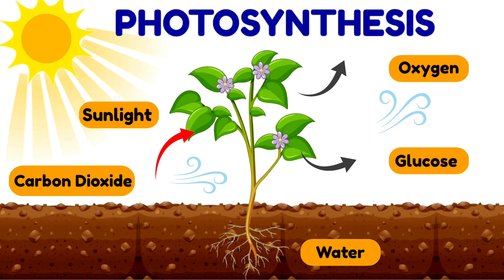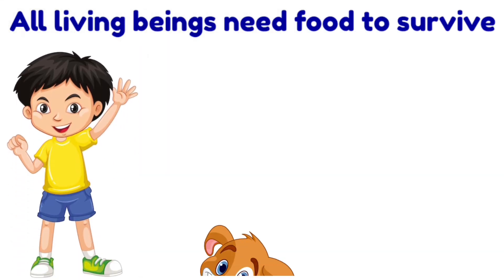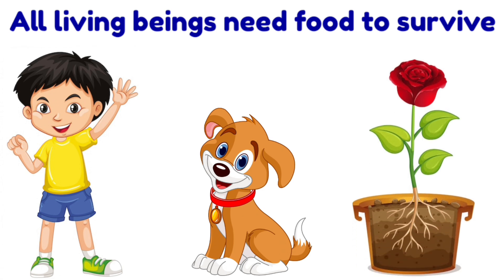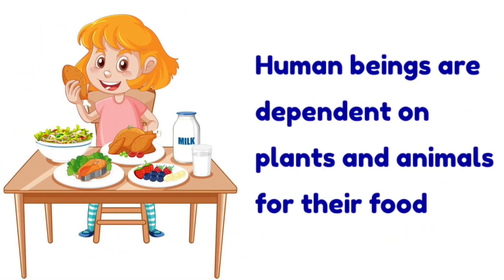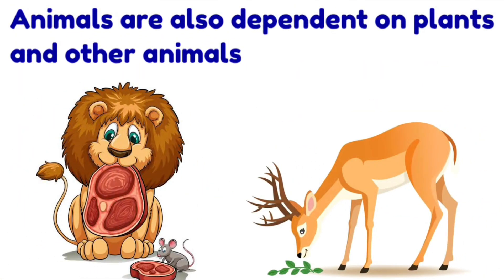Let's read and learn the process of photosynthesis. All living beings that we see around us need food and water to survive, be it human beings, animals, or plants. Human beings are dependent on plants and animals for their food, and animals are also dependent on plants and other animals for their food.